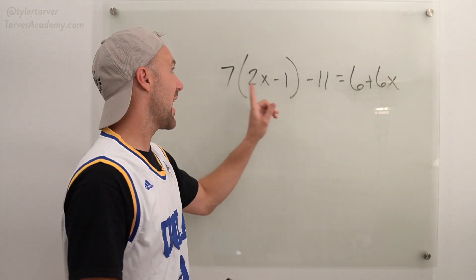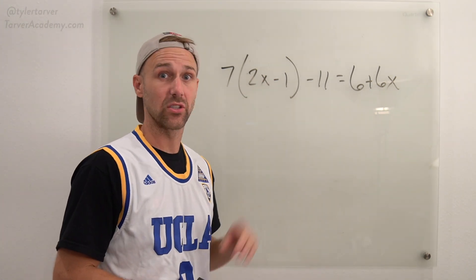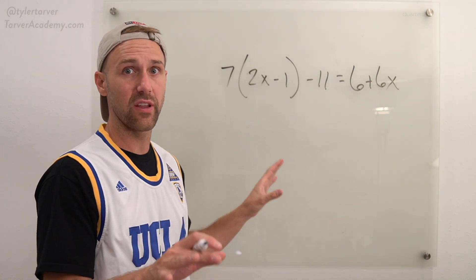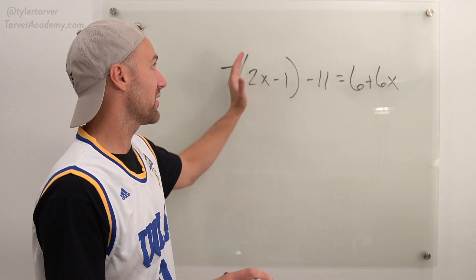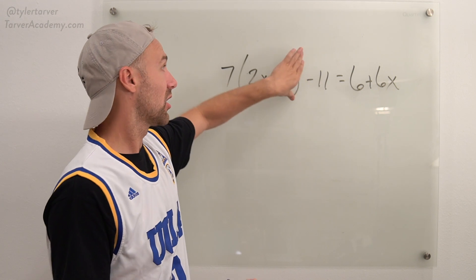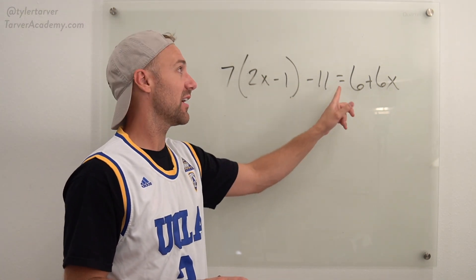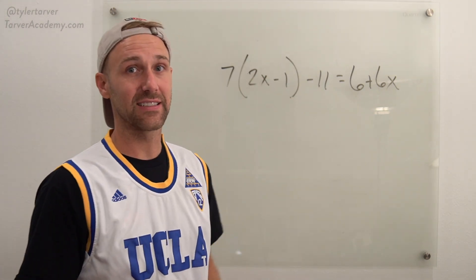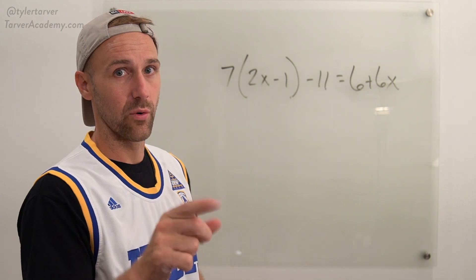So we're doing a multi-step equation that has parentheses. Try to give this a chance on your own and then we'll work it together. It's 7(2x - 1) - 11 = 6 + 6x. Give it a shot and we'll work together.